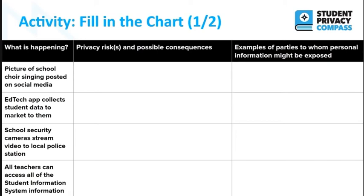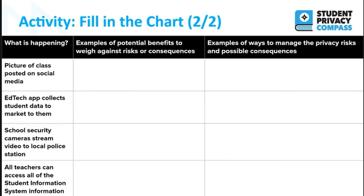Welcome back. Now we're going to go to the second half of the activity. You've looked at the risks, who might see information, and what are some potential consequences. Now we're going to add the other side of the equation and add ways to manage the privacy risks and possible consequences. Here are our same four scenarios: what are examples of potential benefits to weigh against risks or consequences, and what are examples of ways to manage those risks and possible consequences? You can now pause the video to complete the rest of this activity. Thank you so much for joining this training.